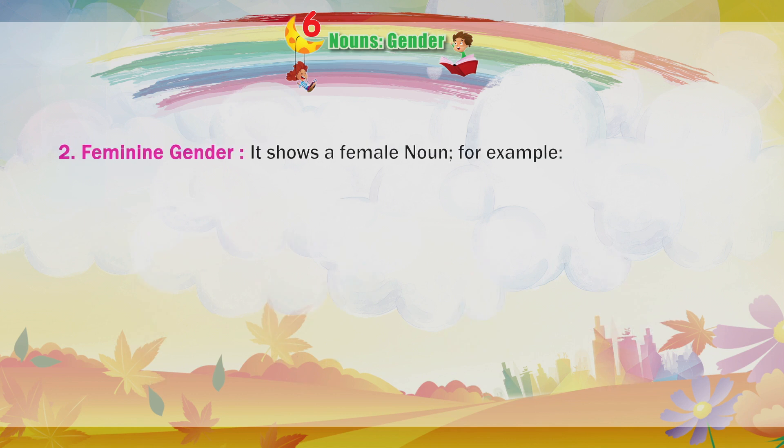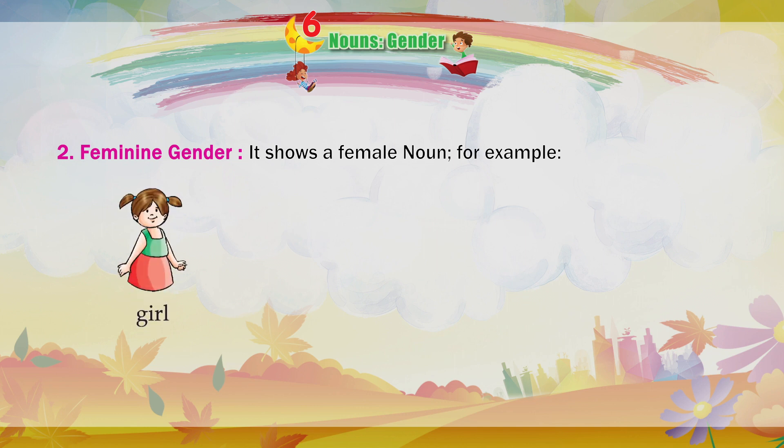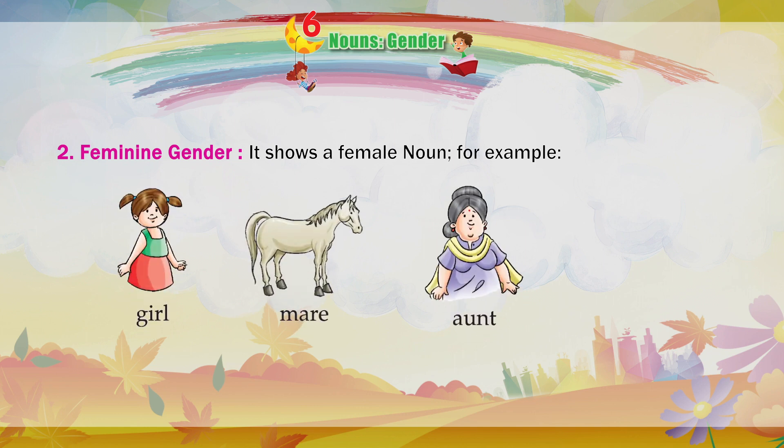Feminine Gender: It shows a female noun. For example: girl, mare, aunt, princess.